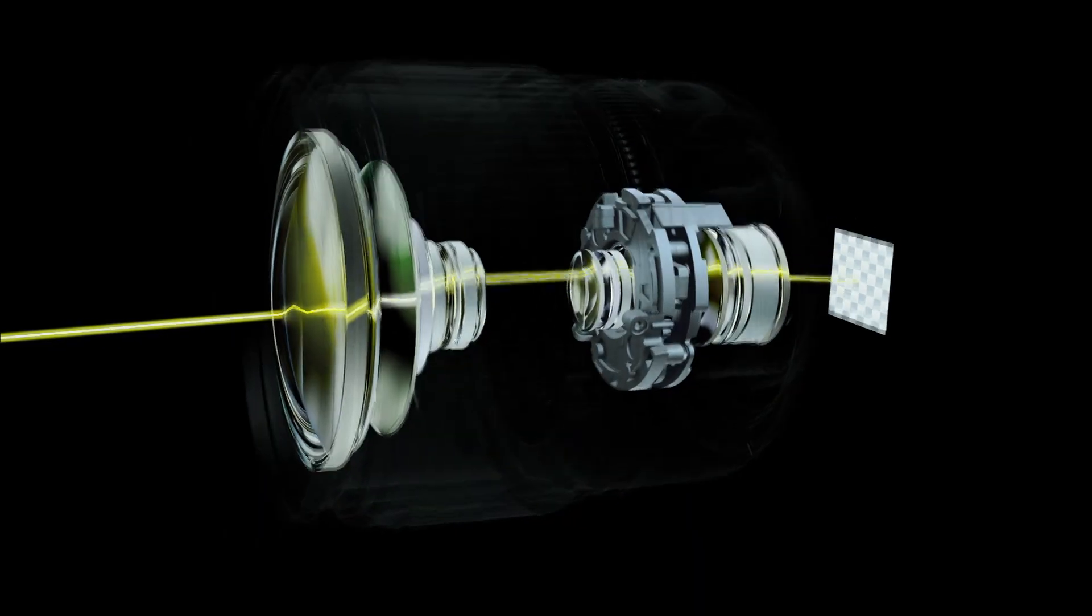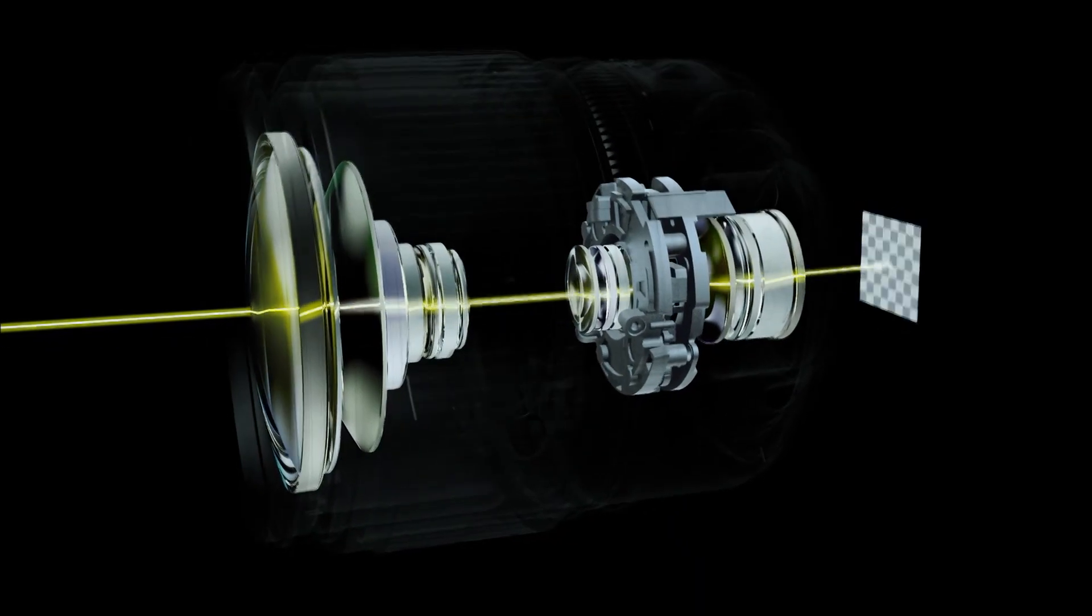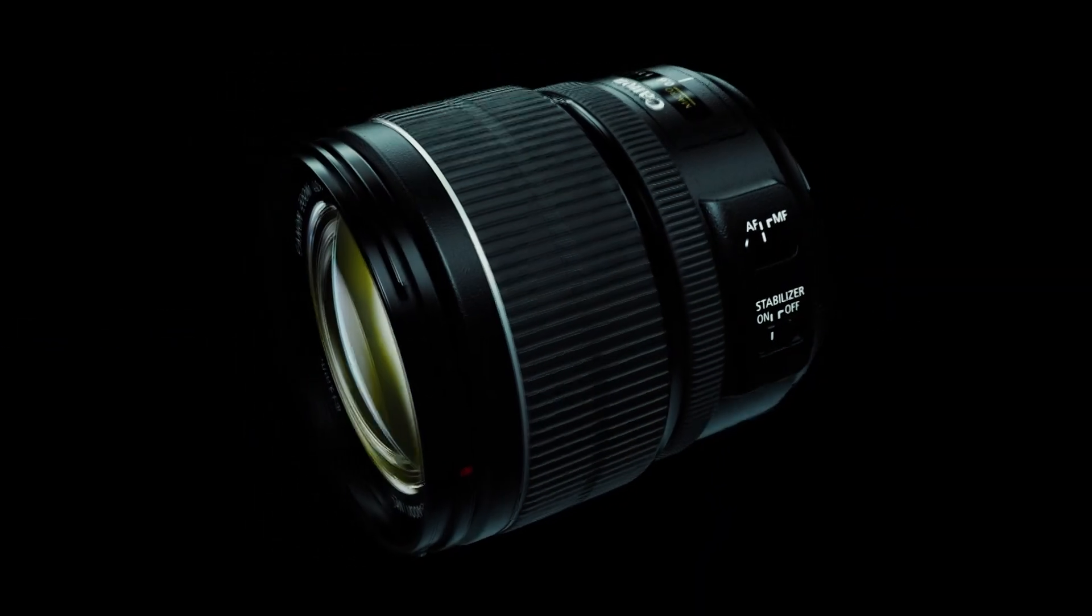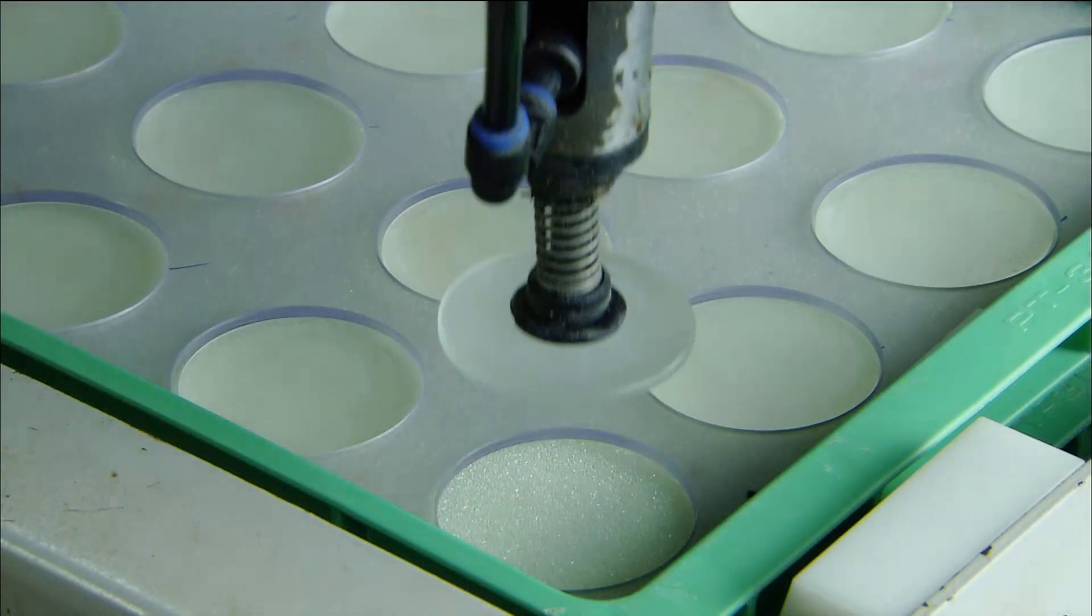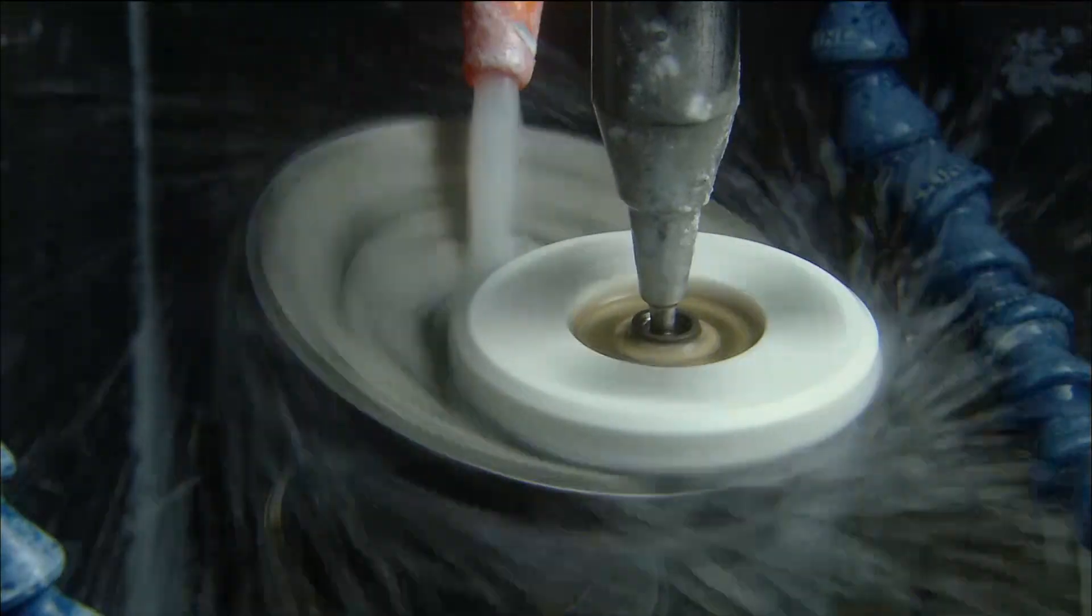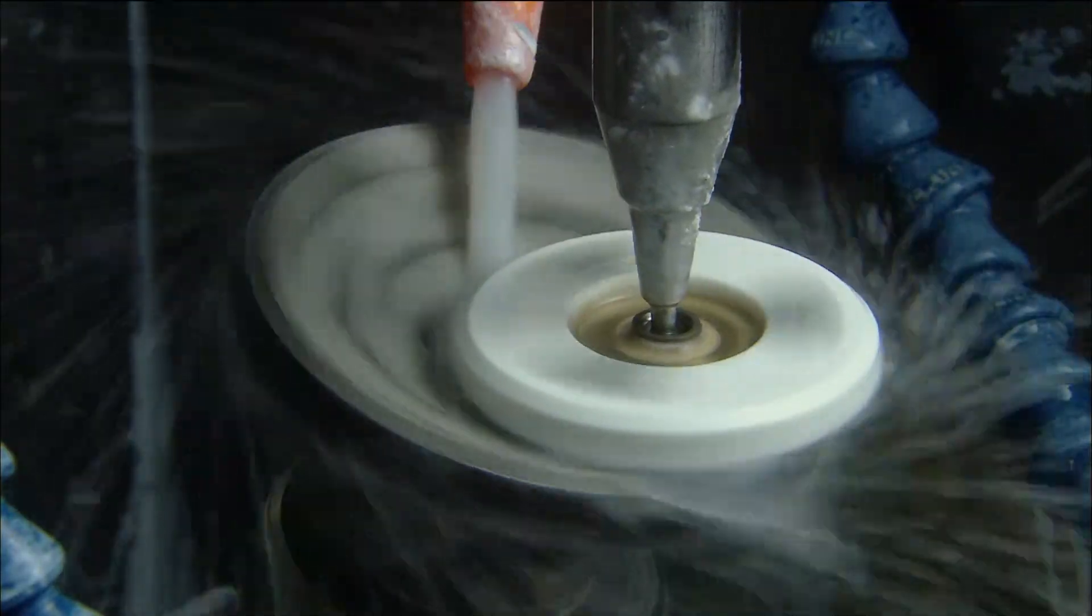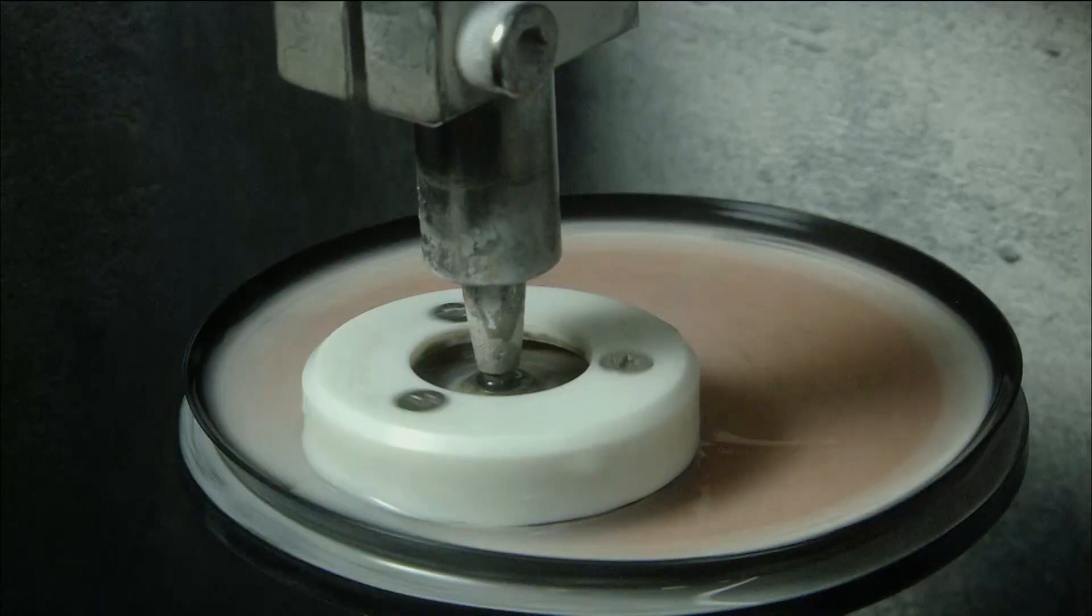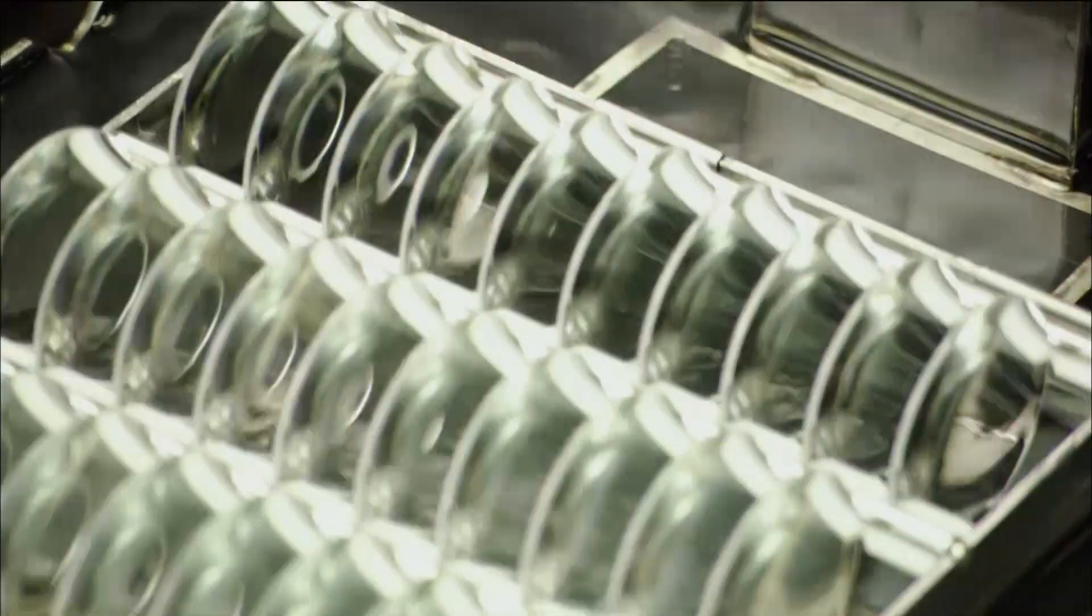Lenses also incorporate the latest technologies, such as ultrasonic motors and image stabilization that corrects for camera shake. Lenses are created by polishing glass. Through years of experience, Canon has perfected the polishing process to achieve the highest levels of precision.